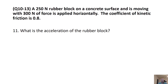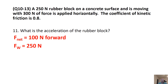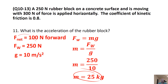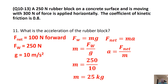What's the acceleration of the rubber block? We know the net force and the weight, and we need mass to use F-net equals MA. Using the weight of 250 newtons divided by g of 10, mass equals 25 kilograms. Then using A equals F-net over M, we plug in 100 newtons and 25 kilograms and get an acceleration of 4 meters per second squared.